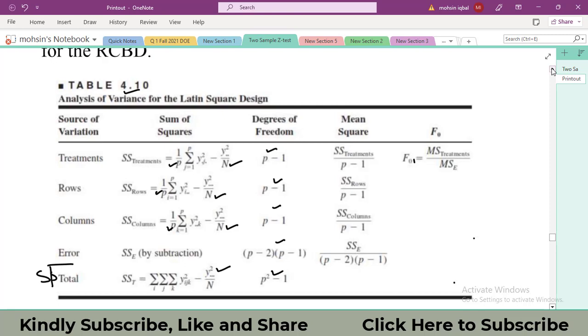After that, we will be done with the sum of the rows. For example, if we have a three cross three Latin Square design, how many rows do we have? Three. So we can write it y1 dot dot, this is the sum of the first row; y2 dot dot, sum of second row; and y3 dot dot, sum of the third row.